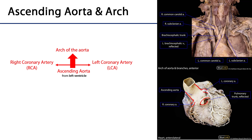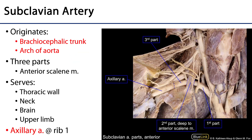From the ascending aorta, blood is then conducted through the arch of the aorta. That arch of the aorta has three main branches: the brachiocephalic trunk, the left common carotid artery, and the left subclavian artery. The brachiocephalic trunk gives rise to the right subclavian artery and the right common carotid artery.